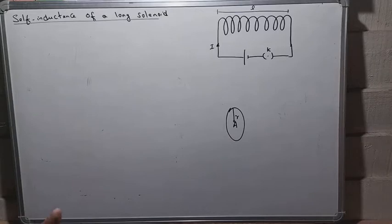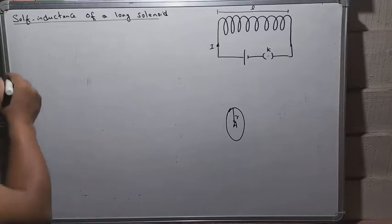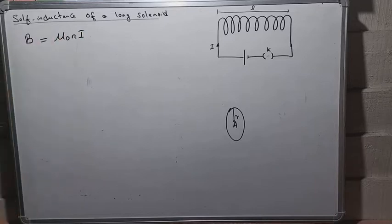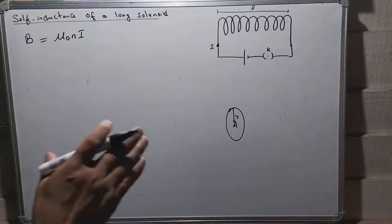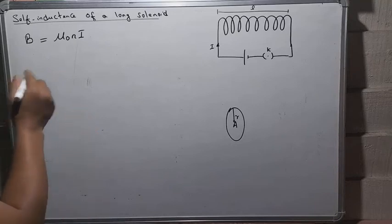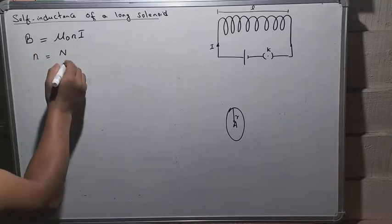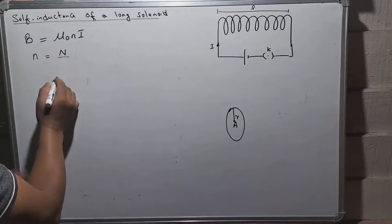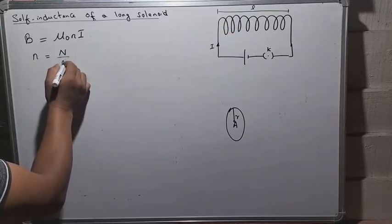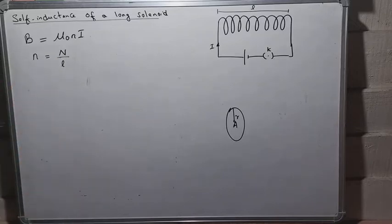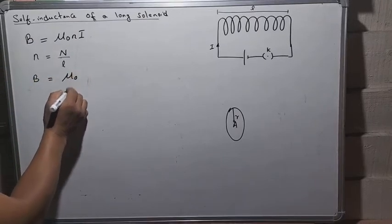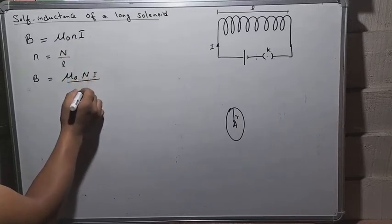The magnetic field inside the coil is given by B equals μ₀nI, where μ₀ is the permeability of free space, and small n is the number of turns per unit length. Suppose this solenoid has capital N number of turns, so small n will be capital N upon small l, which means the number of turns per unit length. So B equals μ₀(N/l)I.